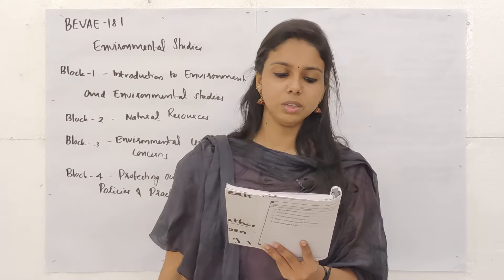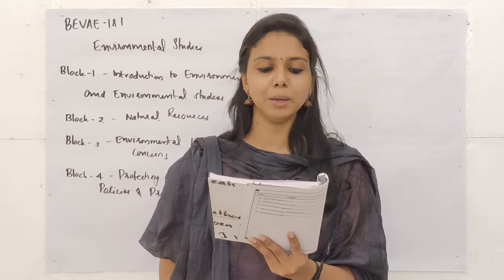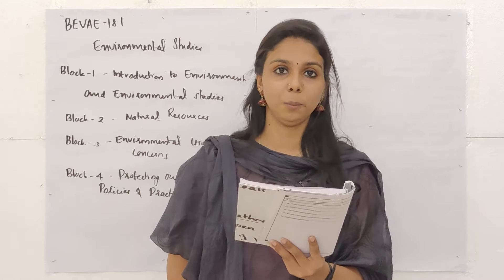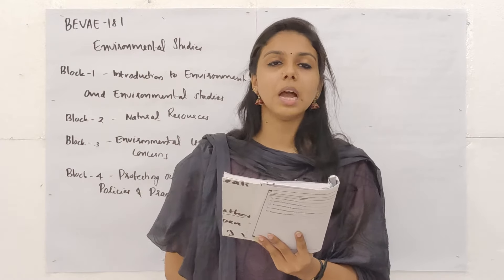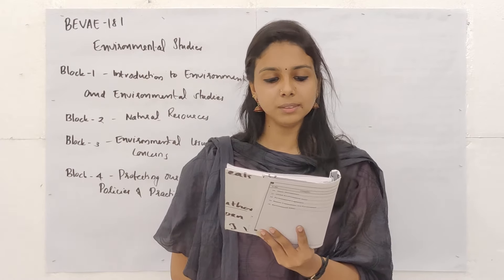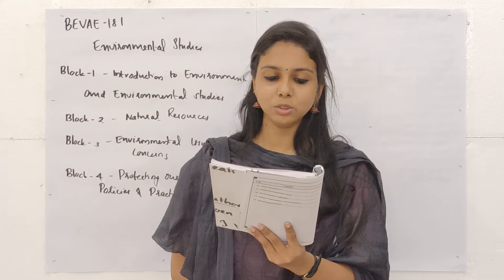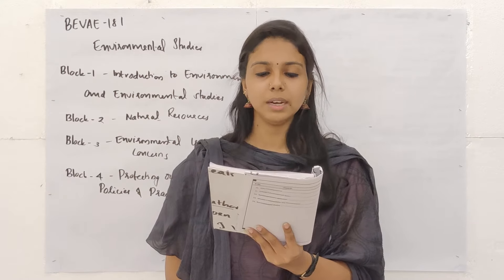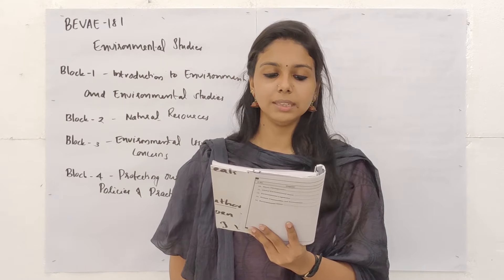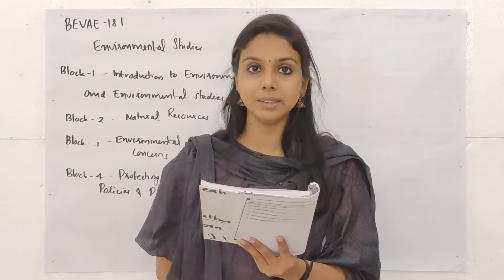First question: Which one of the following is an example of a man-made environment? Options: A. Orchards, B. Sanctuaries, C. Cropfields, D. Plantations. The answer is Cropfields.